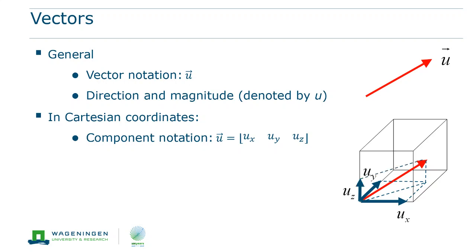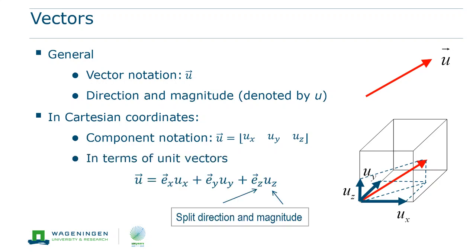But we can go one step further. We can also separate the direction and the magnitude for those components. The direction of the component is given by the unit vector in the given coordinate direction. For example, in the z direction. And the magnitude of the component is given by a scalar. In this case, uz.